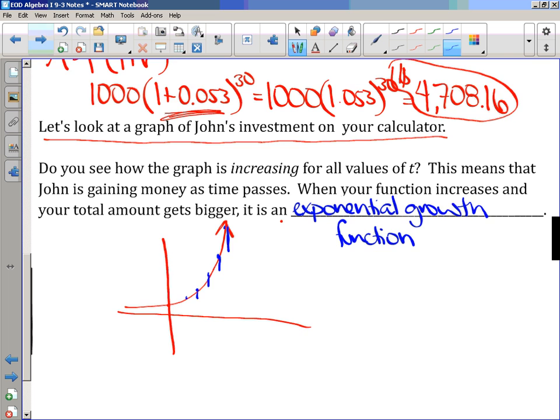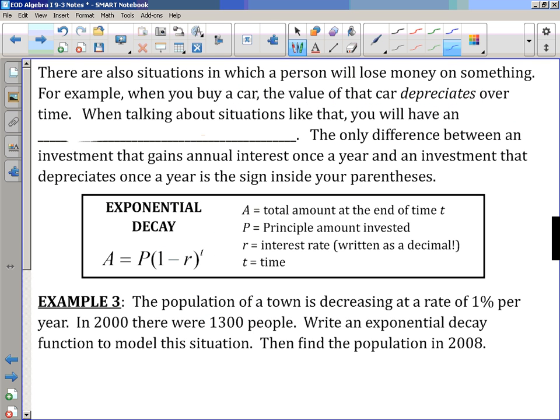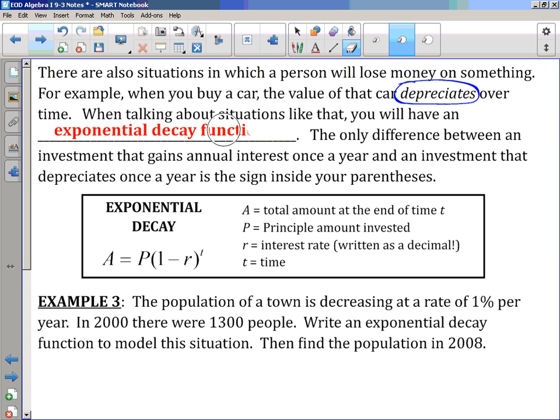So, let's talk about maybe a different type of situation. So, when you put money into the bank, hopefully you're earning money on that. Well, sometimes there are situations where you lose money. So, for example, when you buy a car, the second you drive that car off the lot, it loses some of its value. So, we would say, in that case, we would say that a car depreciates over time. So, if we're talking about a situation where a value is decreasing, we call that exponential decay or it would be an example of an exponential decay function.